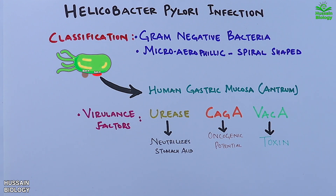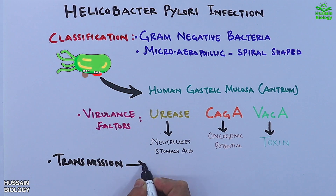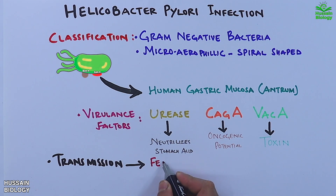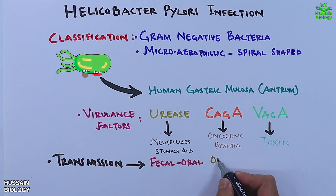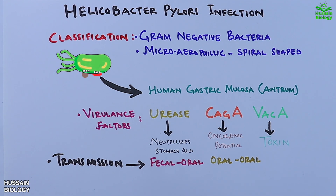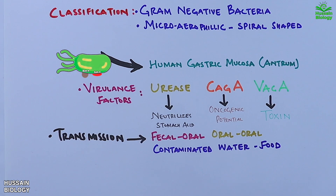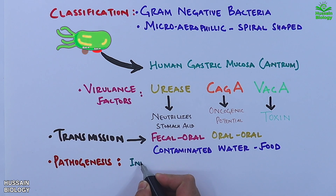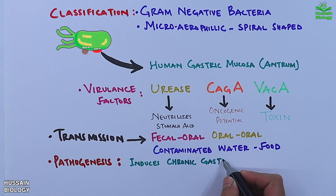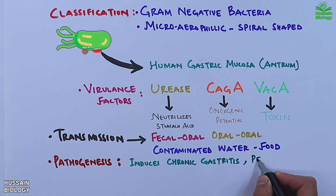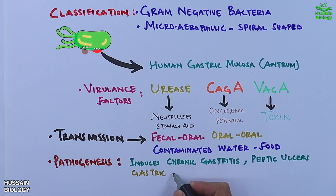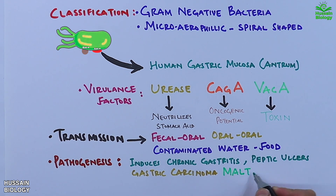Alongside CagA, we have VacA — a toxin that damages stomach cells and leads to inflammation. These virulence factors play a crucial role in the pathogenesis of H. pylori infections. As for transmission, H. pylori spreads primarily through the fecal-oral and oral-oral routes, as well as through contaminated food and water. In its pathogenesis, this bacterium is a major cause of gastritis, peptic ulcers, and in chronic cases, even gastric cancer and MALT lymphoma.